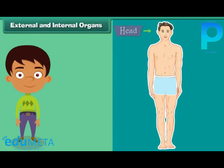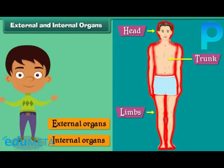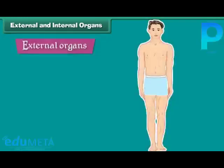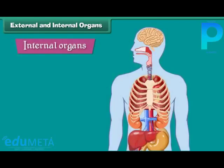Each of the three main parts of the human body bears many organs. These organs may be classified as external organs and internal organs. The organs that can be seen from outside are called external organs — for example, eyes, ears, nose, mouth, and limbs.